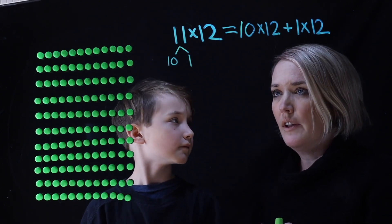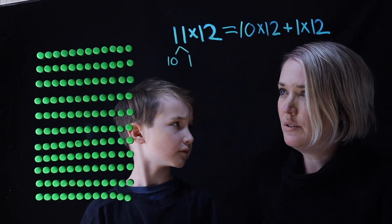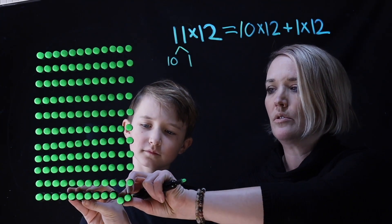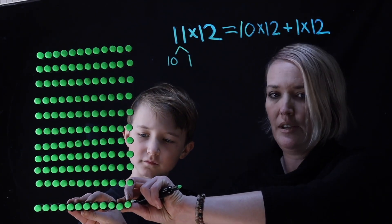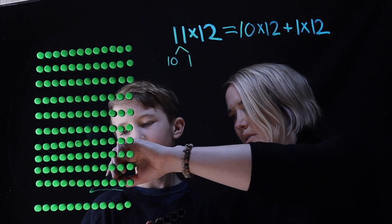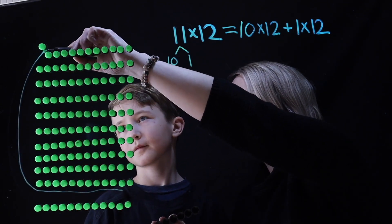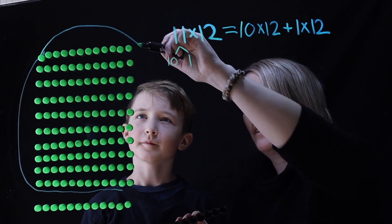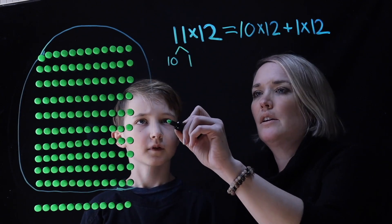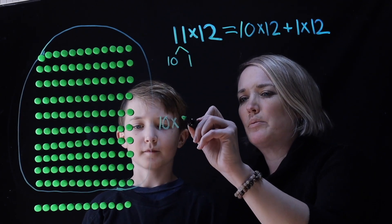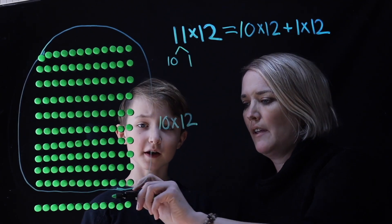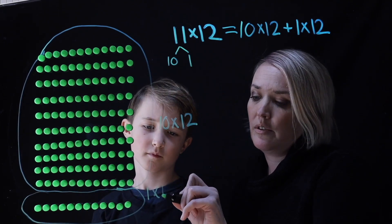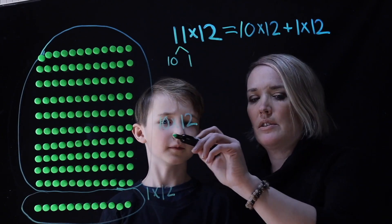Okay, so let's move this one right here — this one group of 12. And then let's keep these ones. Almost lost one. There we go. This here is 10 groups of 12, and this one here is one group of 12.